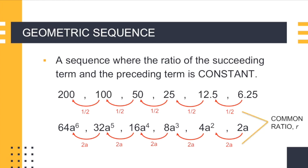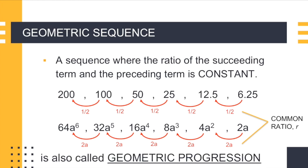So 1 half for the first sequence and 2a for the second sequence are what we call the common ratio, commonly denoted as r. Geometric sequence is also called geometric progression.